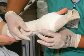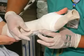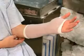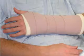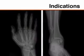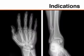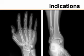Splinting immobilizes injured extremities and prevents further injury, decreases pain and bleeding, and allows healing to begin. While there are many indications for splinting an extremity, three main types of injuries are commonly treated in outpatient settings.